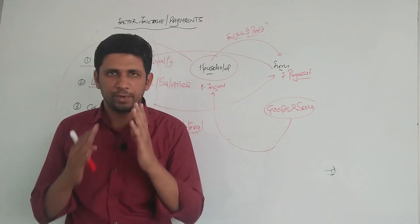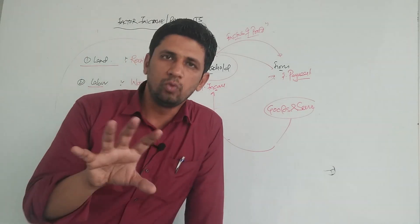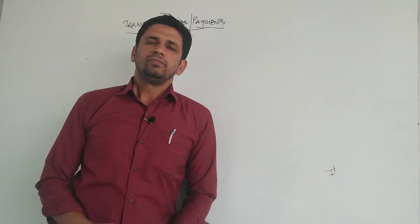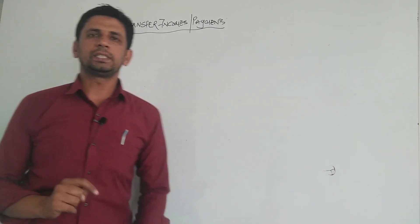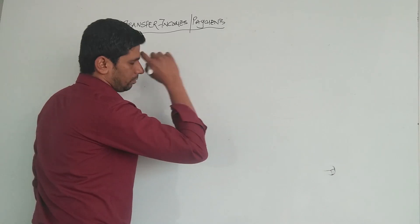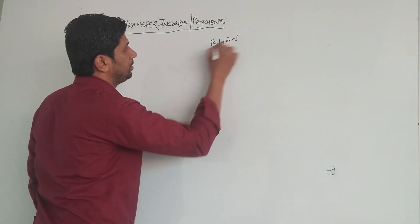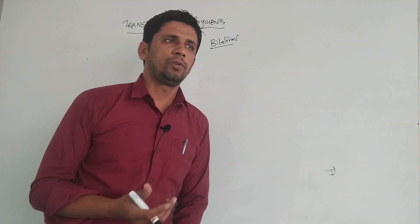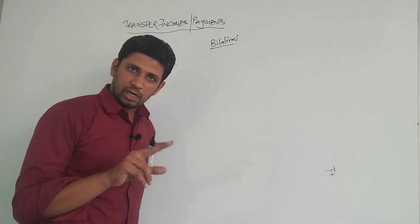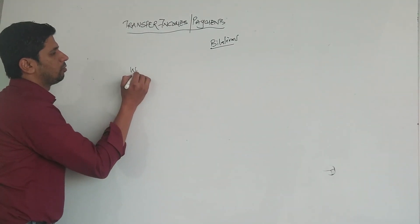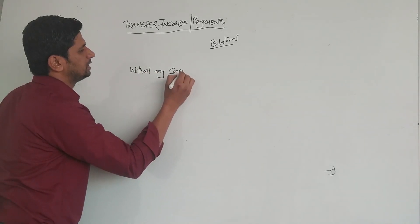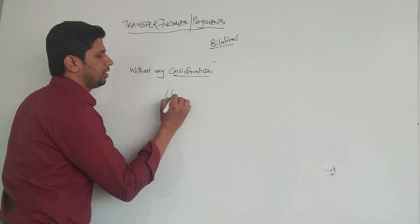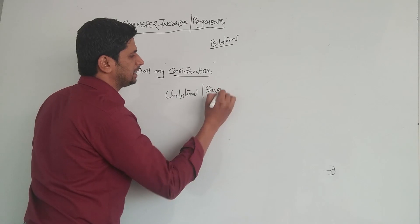Now, the second type of payments are transfer income or transfer payments. Unlike factor incomes, which are bilateral payments made against some consideration, there are some payments which are unilateral — single-sided payments paid without any consideration. You receive nothing in exchange against the transfer payment — these are called unilateral or single-sided payments.